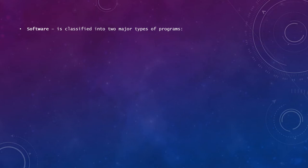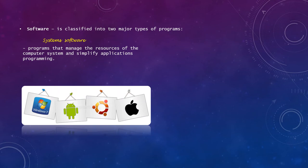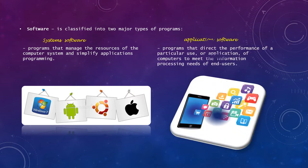For software, it is classified into two major types of programs. System software is a program that manages the resources of the computer system and simplifies application programming. Examples include Apple Mac OS, Google's Android, etc. Application software is a program that directs the performance of a particular use of computers to meet the information processing needs of the end user. Examples include camera applications, MS Word, games, music, etc.